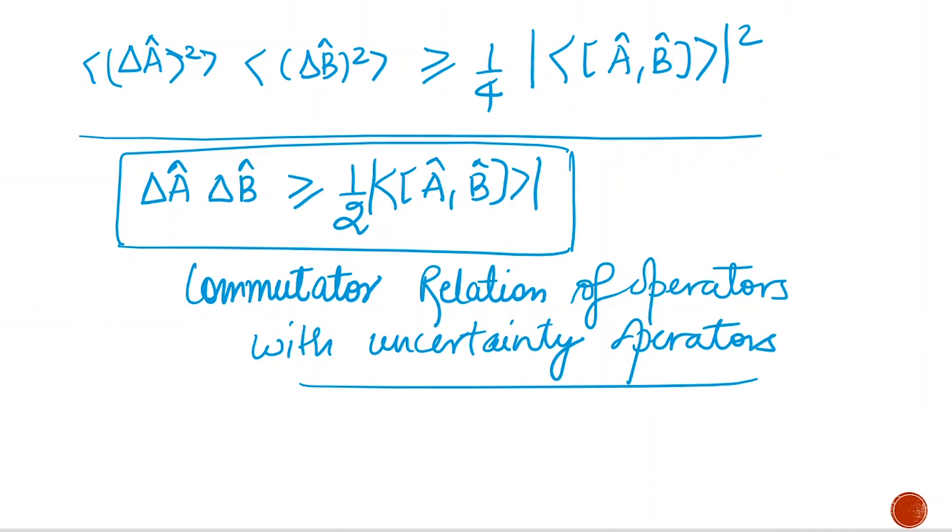So this is the uncertainty commutator relation of operators with uncertainty operators. That's it for today. If you have any doubts, you can write in the comment box. Thank you for watching this video.